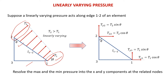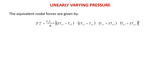Once theta is determined, we resolve the pressure into X and Y components at the related nodes. At node 1, we name it TX1 for the X component and TY1 for the Y component. Similarly, at node 2, we name it TX2 for the X component and TY2 for the Y component. After obtaining the resolved values TX1, TY1, TX2, and TY2, we plug them into the equivalent nodal force equation.